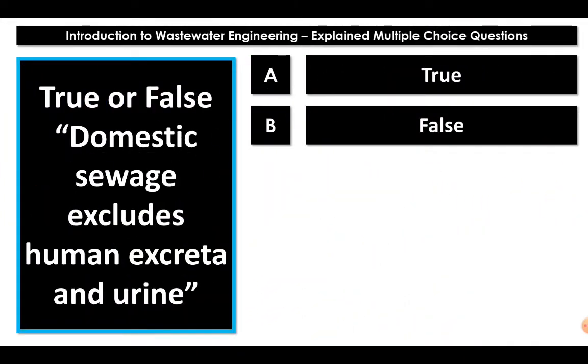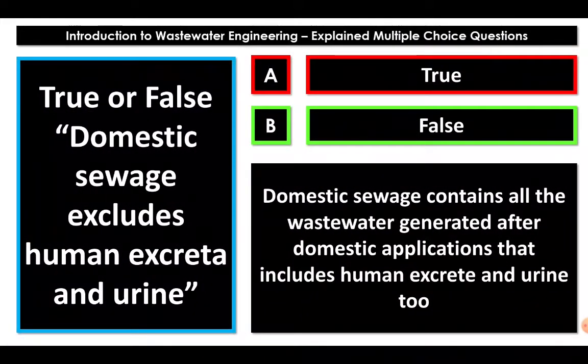State whether true or false: domestic sewage excludes human excreta and urine. The statement is false. Domestic sewage contains all the wastewater generated after domestic application — after the use of water for domestic purposes — and it does include human excreta and urine. That's why saying domestic sewage excludes human excreta and urine is false.